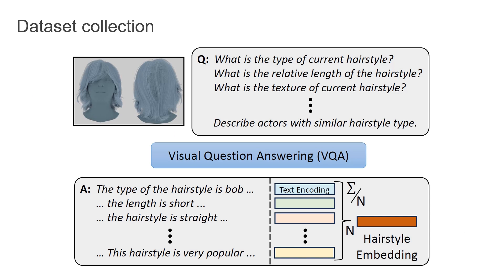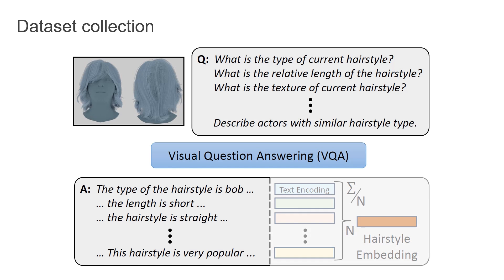To generate descriptions for the synthetic hair styles, we feed a randomly sampled set of questions into a visual question answering system. These questions are pre-generated with the help of ChatGPT and produce a comprehensive description of the hair style. The resulting textual descriptions are then encoded and averaged to obtain the resulting hair style embedding.